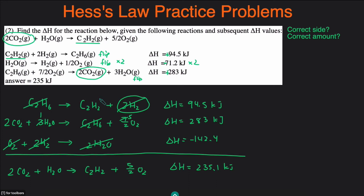So just to recap: always approach Hess's Law with the shortcut. Look at the final reaction, pick out a species that only appears in one of the given reactions, and see if you can figure out what to do with each of the reactions. If you can, use the shortcut and don't write everything out. But if you can't figure out what to do with each reaction, write out the reactions and focus on canceling out what shouldn't be in the final reaction — for example, H2 doesn't appear in the final reaction, so we put an equal amount on the opposite side.